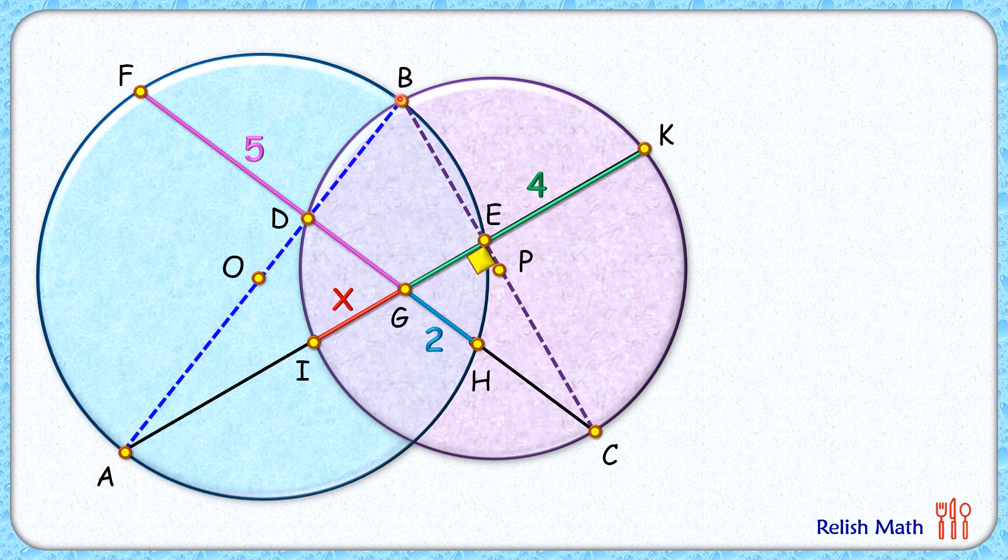Same logic: BC is the diameter of the purple circle. It will sustain angle 90 degrees at the circumference, and thus this angle D here is 90 degrees, and this remaining angle here is 90 degrees.